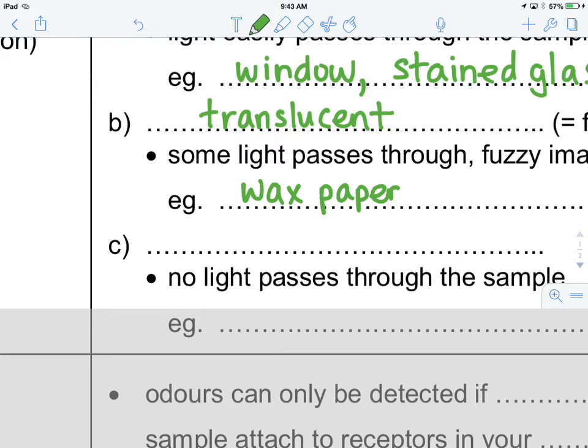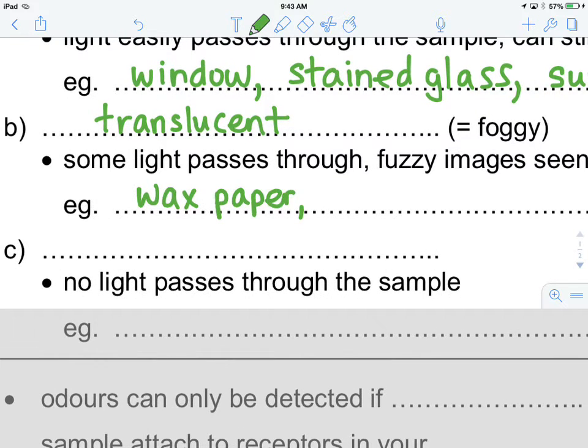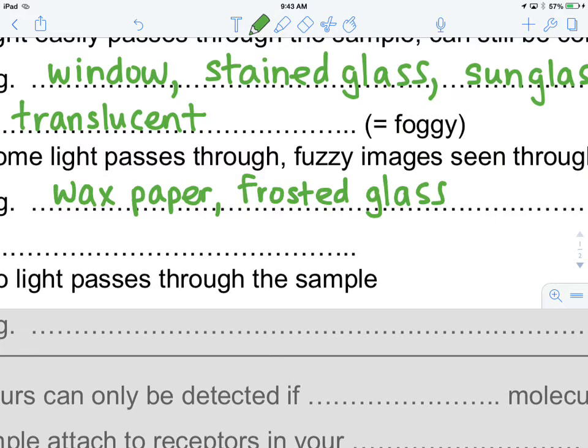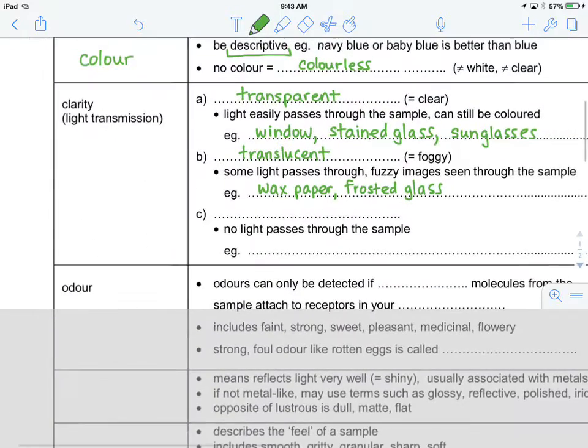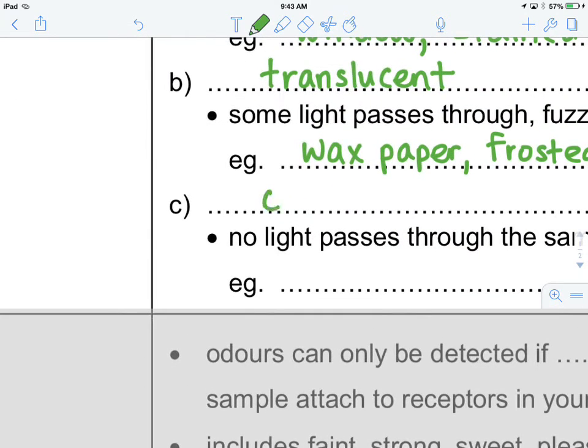Wax paper is certainly translucent, but also frosted glass. You would recognize that, certainly living in Canada in the winter, we would recognize that frosted glass, yes, it allows some light to pass through, but we wouldn't be able to see clearly through to the other side. The last, and farthest from transparent, all the way down the spectrum to the other side then, is where no light passes through, and we call this opaque.